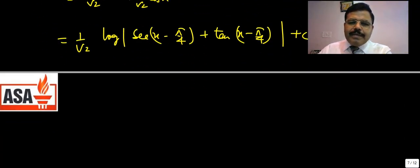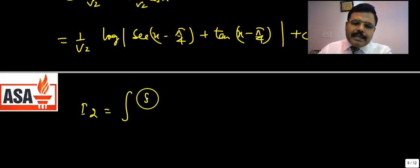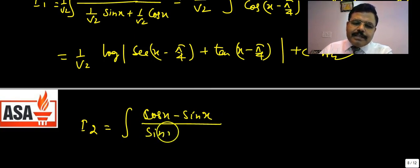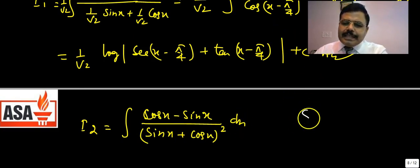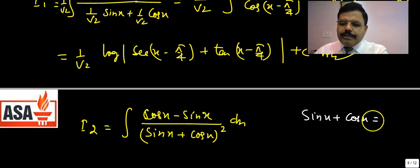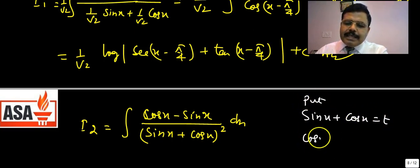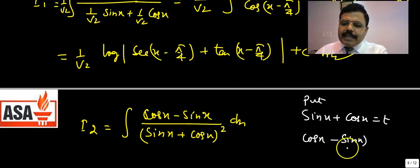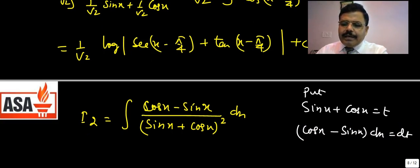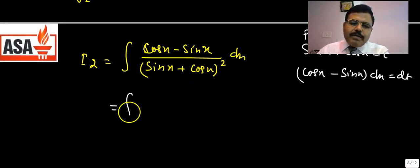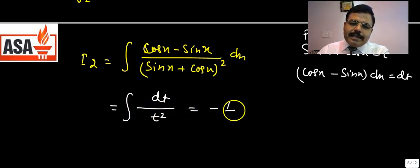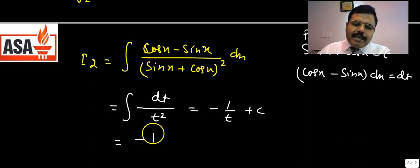For I2 = ∫(cos x − sin x) / (sin x + cos x)² dx, put sin x + cos x = t, so (cos x − sin x) dx = dt. Then I2 = ∫dt / t² = −1/t + c2, which gives −1/(sin x + cos x) + c2.